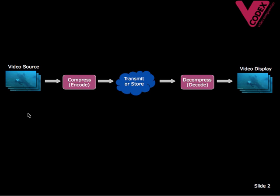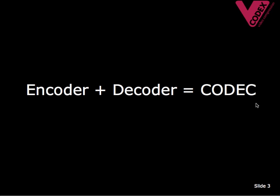Here's the basic idea of video coding. Raw or uncompressed video takes up a lot of space, so it's not practical to store it or transmit it in its original form. A video encoder compresses video into a much smaller size suitable for storing in memory, sending over a network or broadcasting. The compressed video has to be decompressed by a video decoder before it can be displayed. Put together the encoder and the decoder and we have a codec.